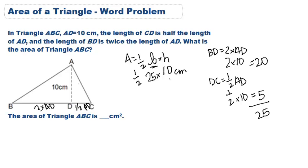25 times 10 is 250 centimeters. And then we need to take half of that to get 125 centimeters squared as the entire area for triangle ABC.